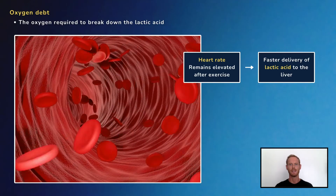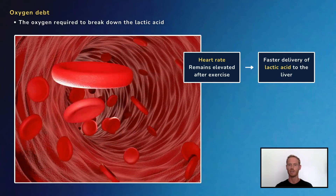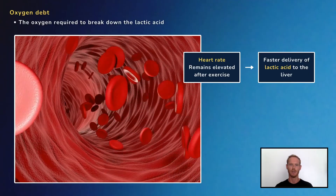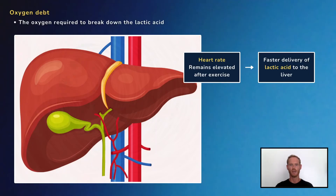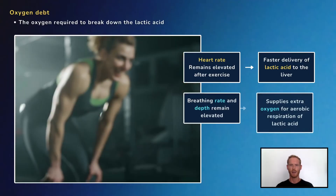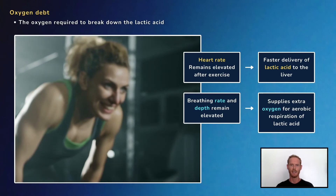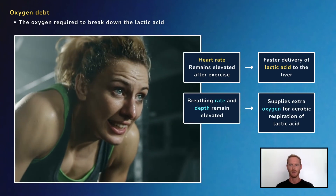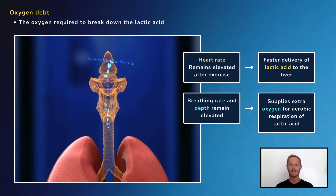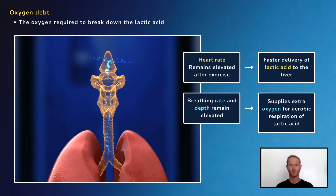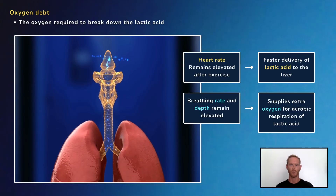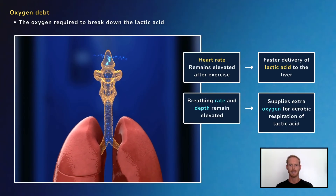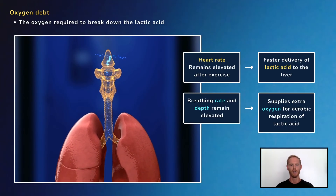Elevated heart rate increases the rate at which lactic acid is transported in the blood from the muscles to the liver, where it's oxidised. Breathing rate and depth also remain elevated for some time after exercise, providing the additional oxygen required for the aerobic respiration of lactic acid in the liver.